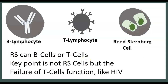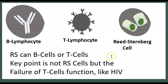Reed-Sternberg cells can derive from B cells or T cells, meaning it could have been the B lymphocytes or the T lymphocytes that were attacked and mutated, but it's mostly the B lymphocytes that get mutated into RS cells. The key point, though, is that it's not the Reed-Sternberg cells themselves we're most concerned with, but rather the failure of T lymphocytes to function and produce antibodies to attack these malignant cells — similar to HIV, for example.